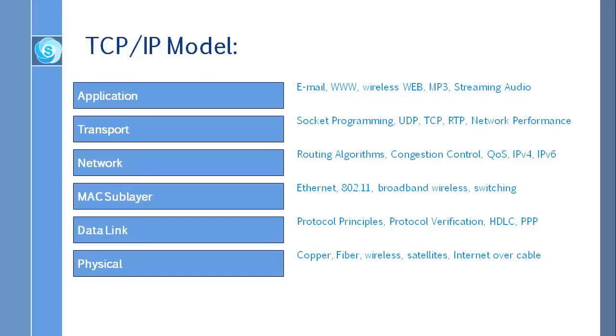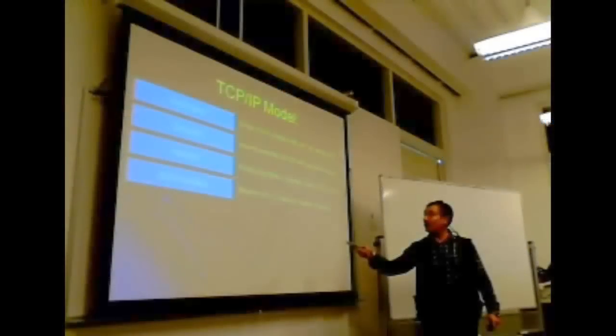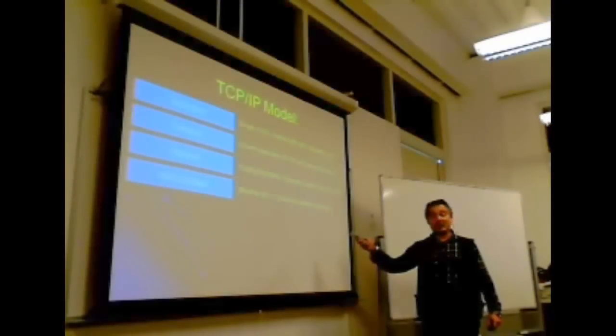And then at the network layer, we have routing algorithms, congestion control, quality of services, and we are using IP version 6 right now. And next up layer, as you see, Ethernet, 802.11 broadband wireless.